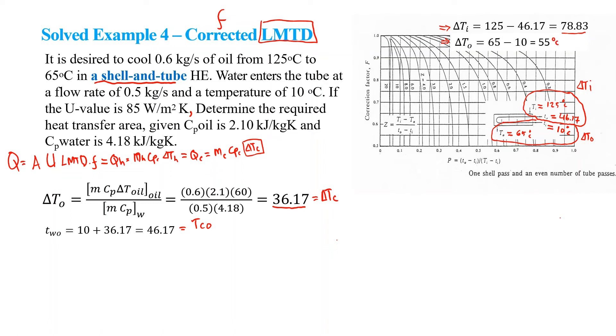To be able to properly use the chart, we need to estimate two parameters, which is the Z value and the P value. The equations are given in the chart. We have identified what is Ti, T capital I, T lowercase io, and so on, so we can then calculate what is Z and what is P.